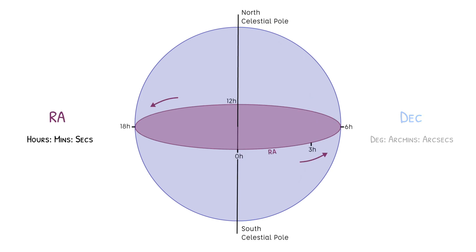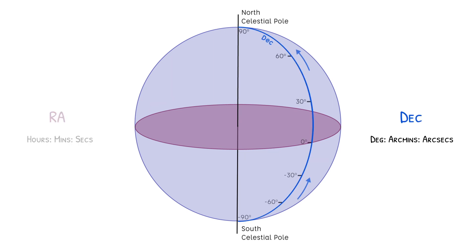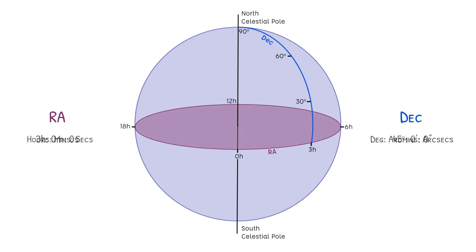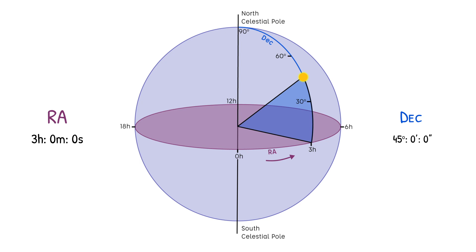The map runs from 0 hours to 24 hours, matching the rotation of the Earth on its axis. Declination is measured in degrees from 90 degrees at the North Pole to minus 90 degrees at the South Pole. A declination of 0 degrees is directly overhead if you're standing at Earth's equator — this is called the celestial equator. Measuring the height of a cosmic object above the celestial equator gives its declination, and the distance around the equator gives the right ascension.